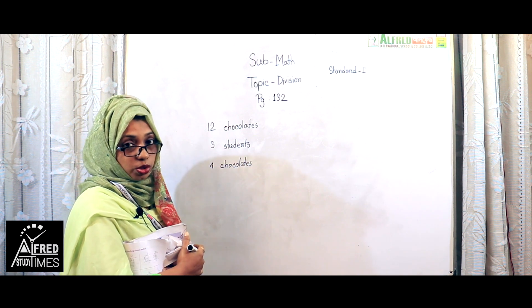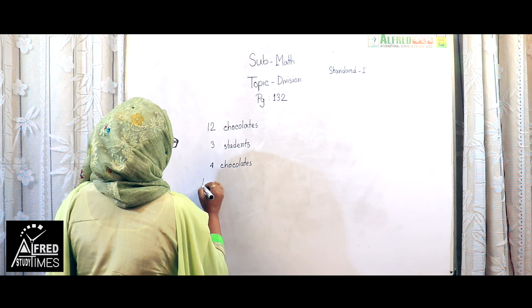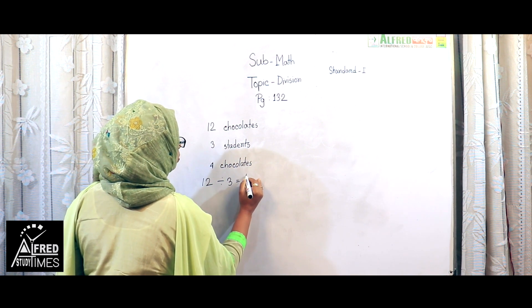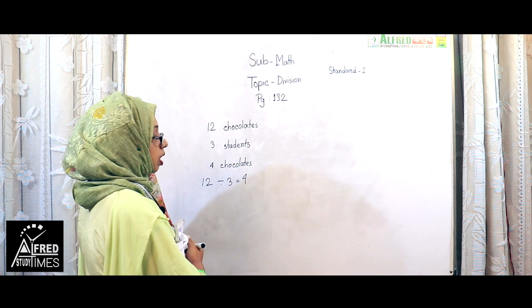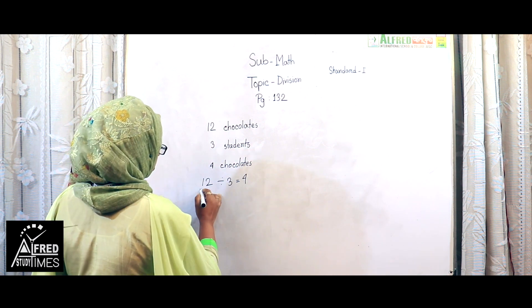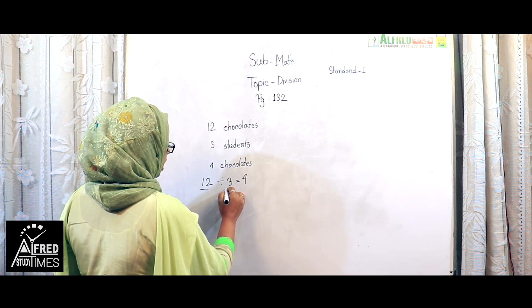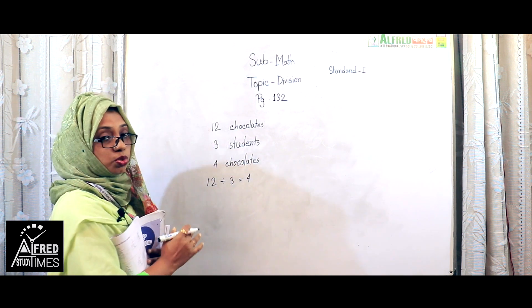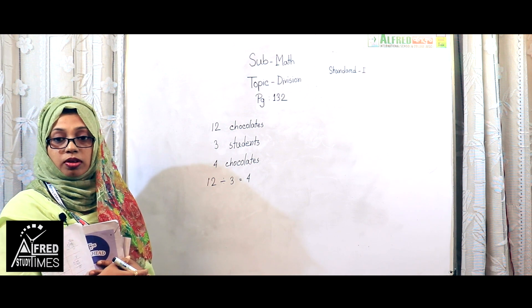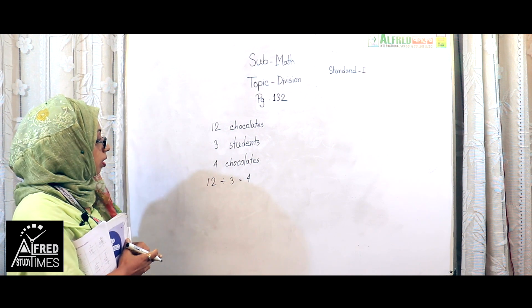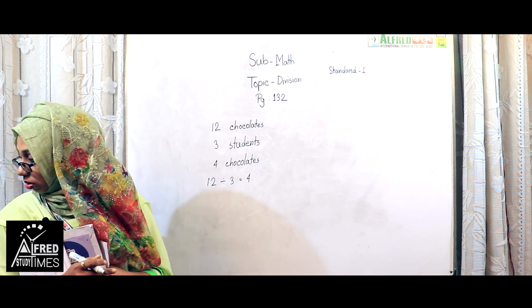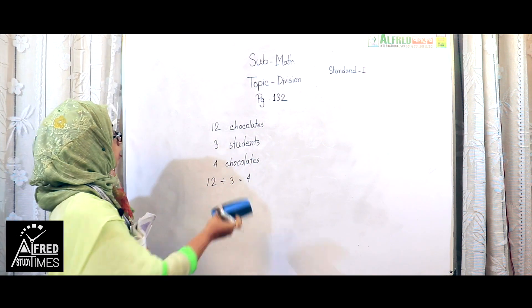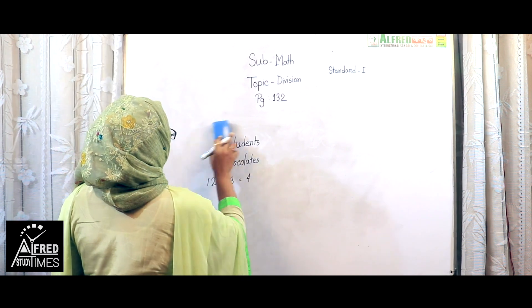How can I do this? Look: 12 divided by 3 equals 4. I divide 12 by 3 and get 4. So each student can get four chocolates equally.